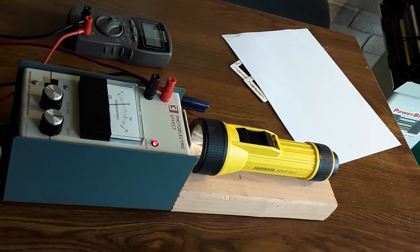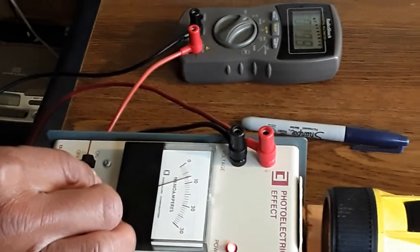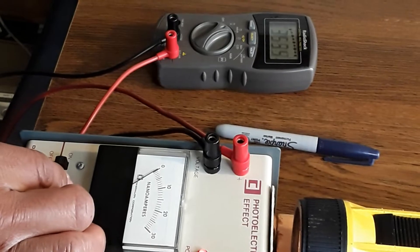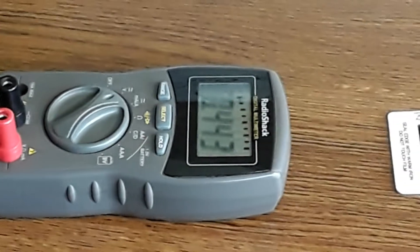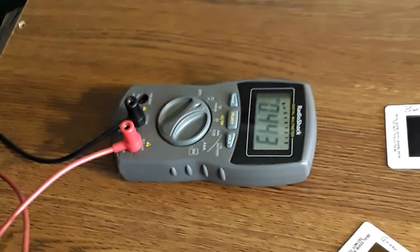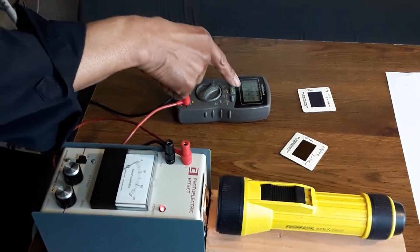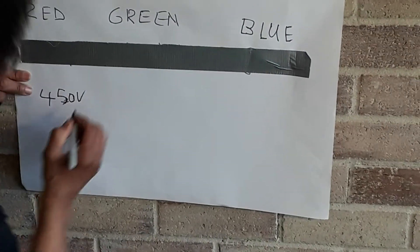Now we're going to turn on our light source, and now we have current flowing. We're going to apply our back voltage to stop the current from flowing. As we increase the frequency, the stopping voltage will be a higher value. With the red filter, the stopping voltage I've applied is 0.450 volts — you can see there's no current flowing and the stopping voltage value is 0.450 volts.